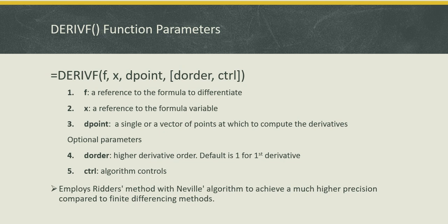There are two additional optional parameters. The fourth one is the derivative order you want to compute. The default is the first derivative, and if you want to compute higher derivatives you can supply two, three, or four. And the fifth argument enables you to control the internal algorithm.